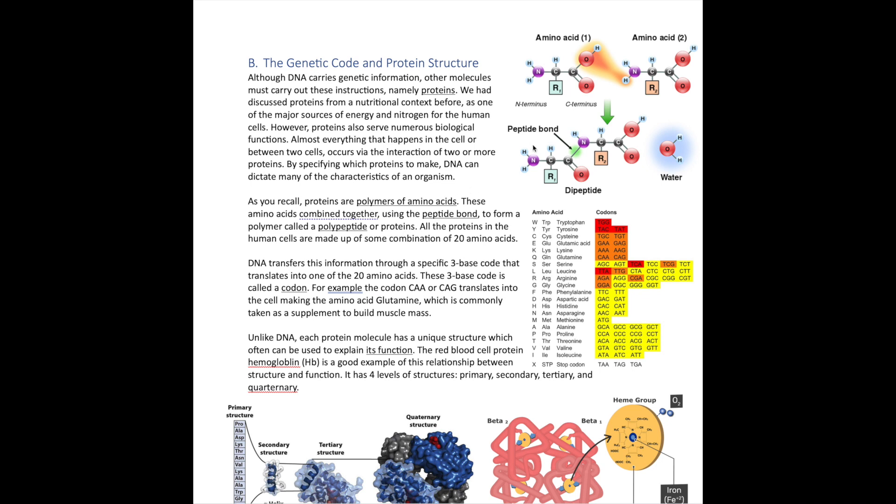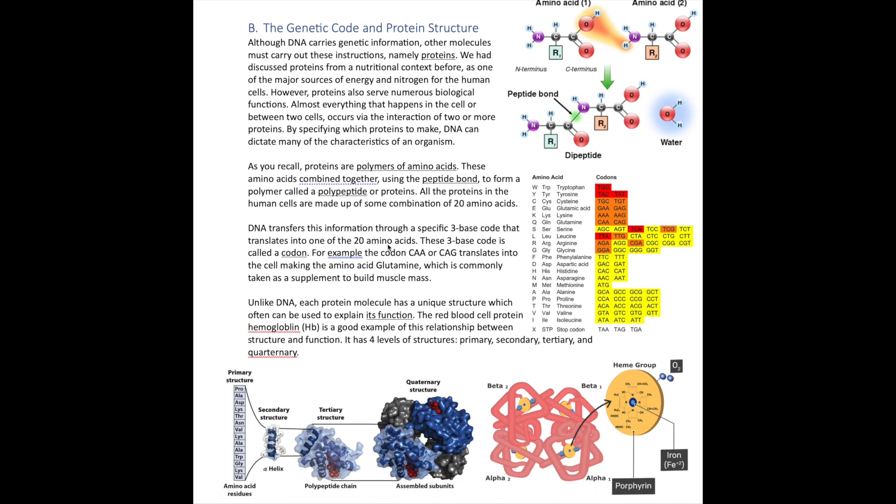If you do this with many amino acids, you have a chain of peptide bonds, which we call a polypeptide or protein. How does the DNA molecule transfer information from its code—the four bases: adenine, thymine, guanine, and cytosine—into this amino acid code of proteins? DNA uses a three-base coding system. Every three bases in DNA codes for one of the amino acids.